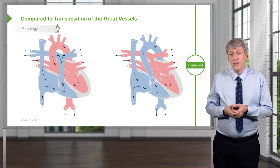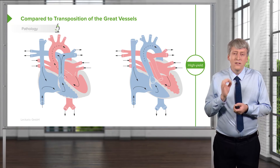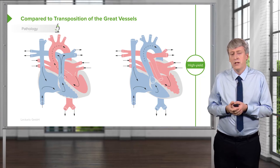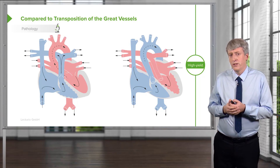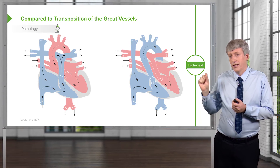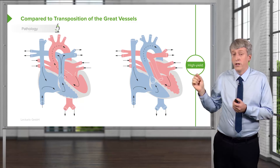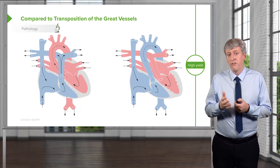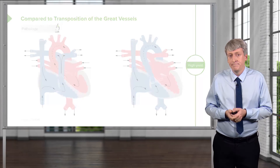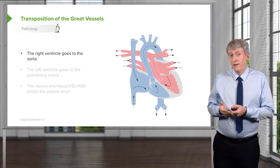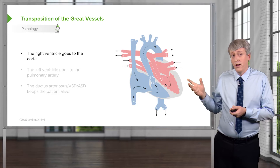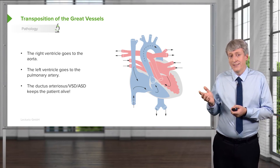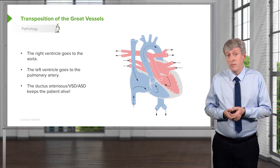These patients need an arterial switch operation, which is complicated, and they usually require catheterization because the coronary arteries can be coming off the left side of the aorta or the right side, and you need to know where those coronary arteries are to fully fix the problem surgically. The right ventricle goes to the aorta, the left ventricle goes to the pulmonary artery, and the ductus, VSD, or ASD is keeping the patient alive.